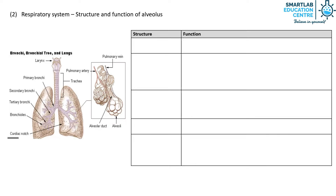As mentioned earlier, there are three types of bronchi — in this diagram you can see the primary bronchi, secondary bronchi, and tertiary bronchi. Now, let's zoom in on the structures of the alveolus, the site of gaseous exchange.